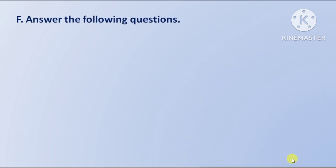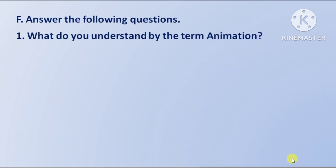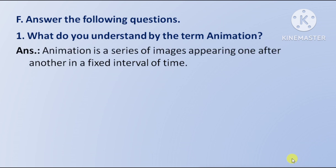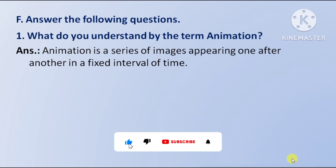Answer the following questions. First question: what do you understand by the term animation? Answer: Animation is a series of images appearing one after another at a fixed interval of time — animation images ka series hai jo ek doosre ke baad fixed interval of time mein appear hote hain.